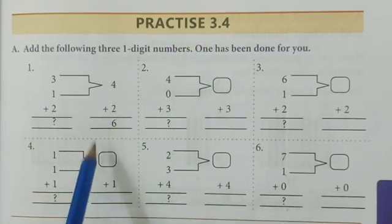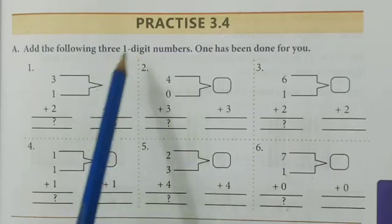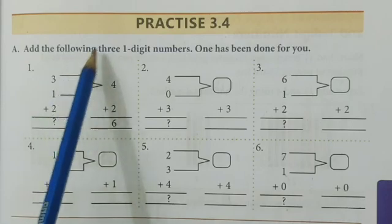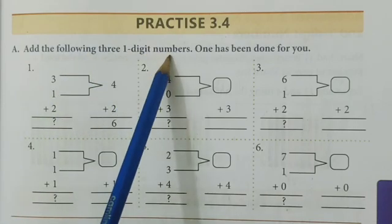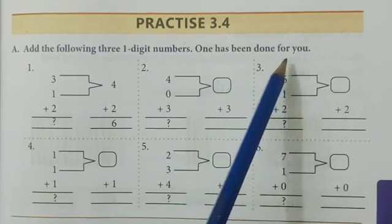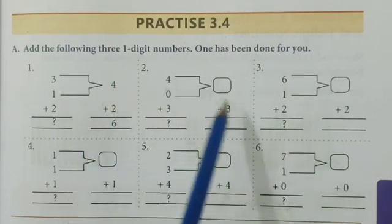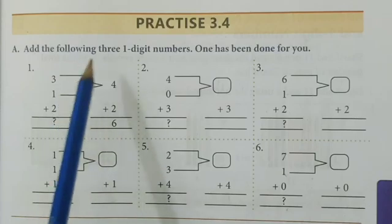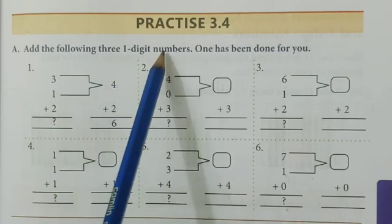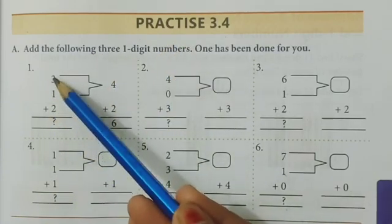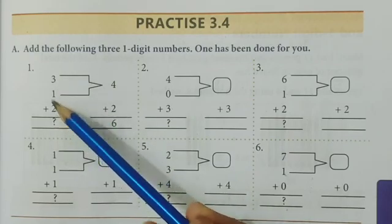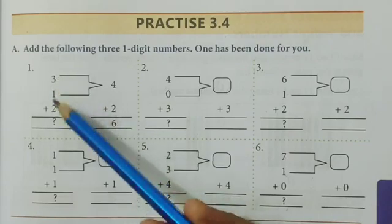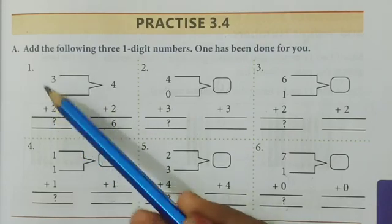When we are going to learn this, I will tell you some important points. The first question is: add the following three 1-digit numbers. One has been done for you. We will add numbers which are three 1-digit numbers — that means three numbers, each with only 1 digit.